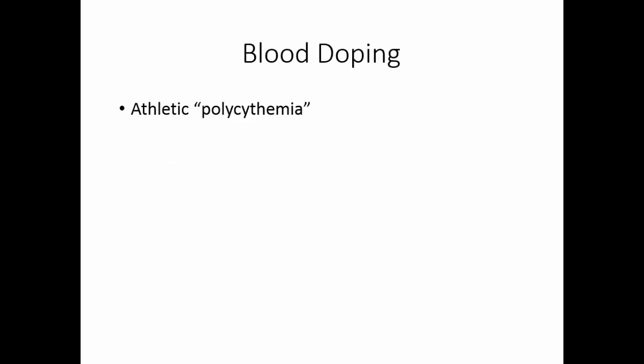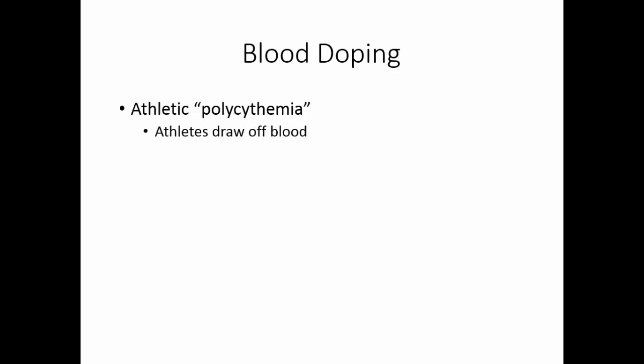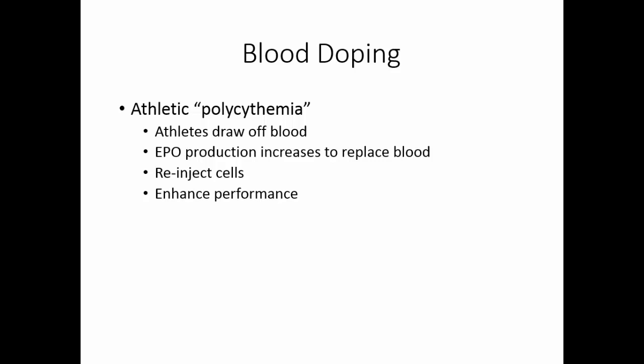Blood doping is a sort of athletic form of polycythemia. Athletes draw off blood, which stimulates normal erythropoietin production to replace it. Then prior to the event, they re-inject red blood cells to enhance performance through more oxygen-carrying capability. The same side effects as using erythropoietin occur — they are subject to blood clotting, heart failure, and stroke. This is considered unethical and has been banned from the Olympic Games.